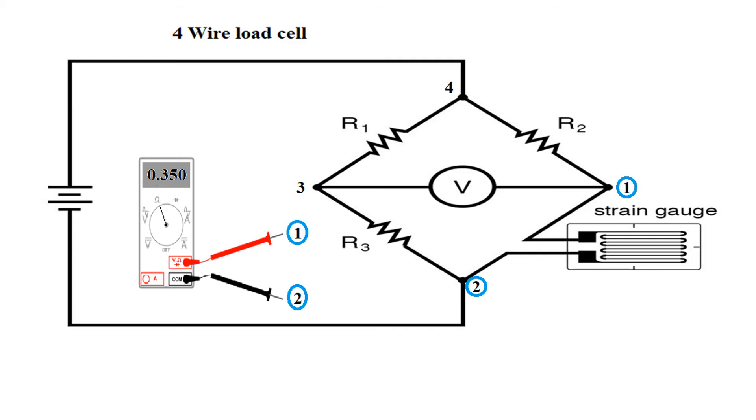The same procedure will be done to the opposite resistance. Ideally the resistance will be the same, 350 ohms, so that the output voltage between wires 1 and 3 will be 0 for a balanced Wheatstone bridge circuit.